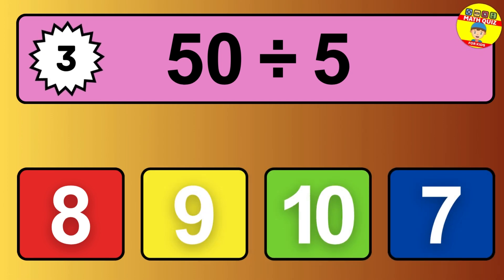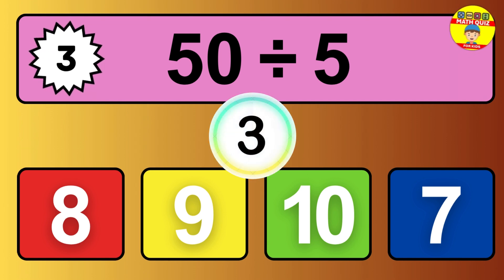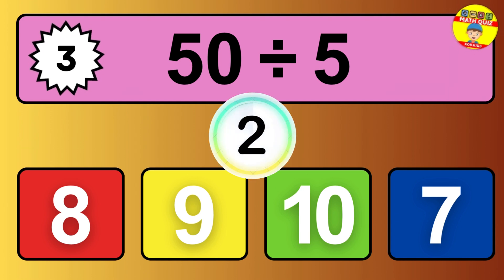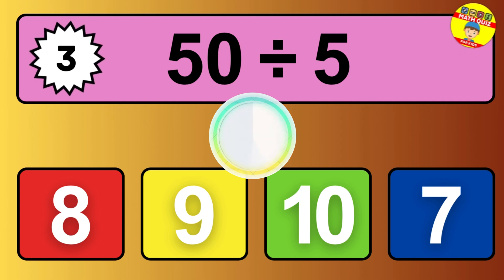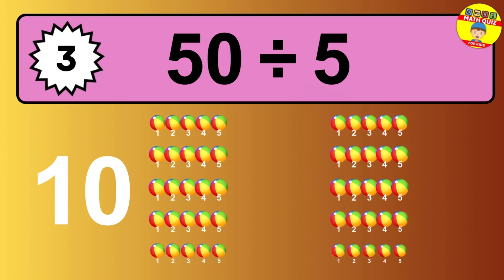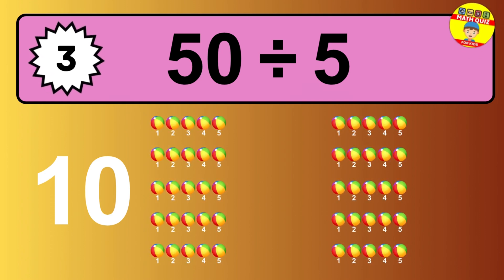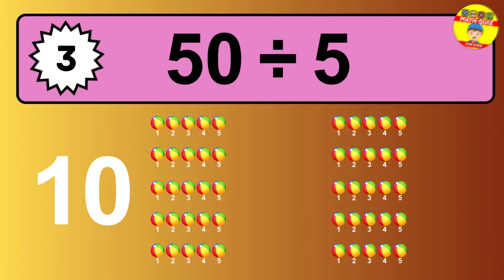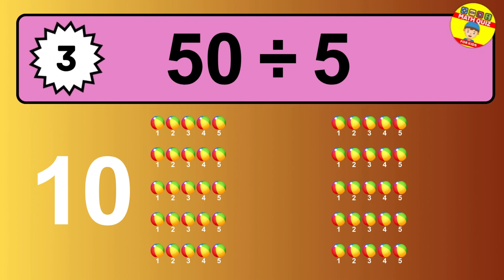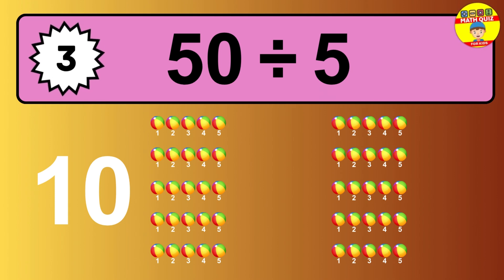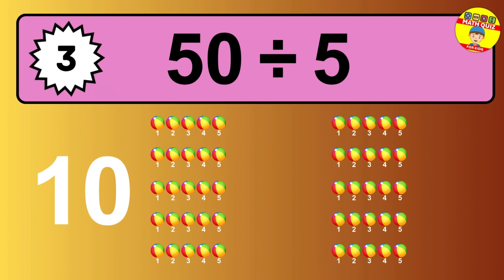What is 50 divided by 5? Picture this: you have 50 objects to divide into groups of 5. How many groups can you make? Let's think about it. Ready to find out? Let's break it down. Imagine you have 50 objects — can you picture them lined up? Now think about splitting them equally into smaller groups of 5.